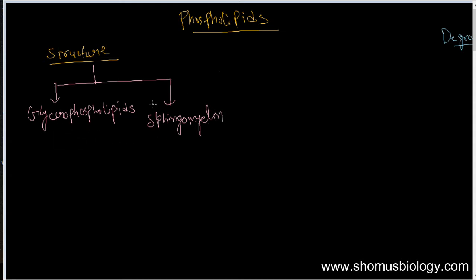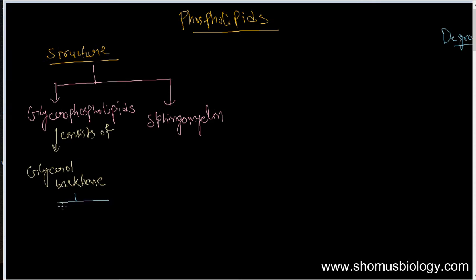The glycerophospholipid consists of a glycerol backbone. From that glycerol backbone there are two different types of structures: one contains an alcohol structure, and the other one is a phosphate group. The third component is two fatty acids.